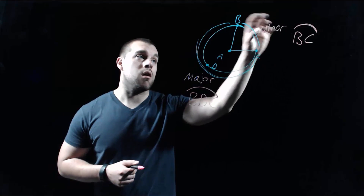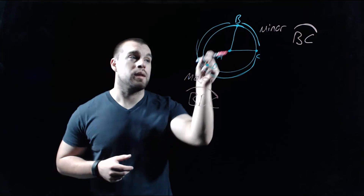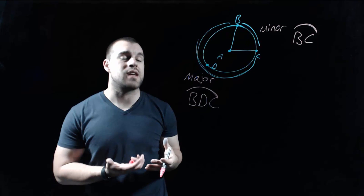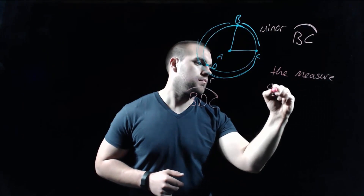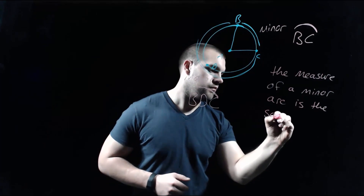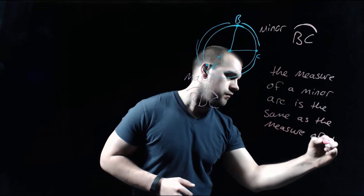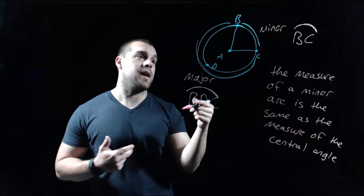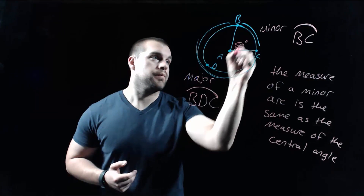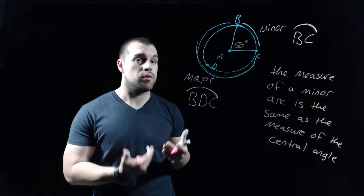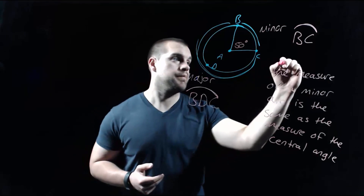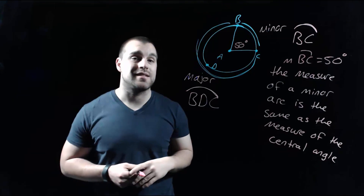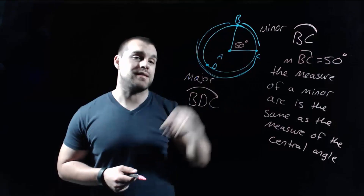With our minor arc BC, there's a relationship between the measure of the central angle and the measure of that minor arc — and the relationship is that they're exactly the same. So in our picture, if this angle in the middle was a 50-degree angle, then the measure of the arc that runs from B to C is a 50-degree arc, because the measure of the minor arc is exactly the same as the measure of the central angle that creates that minor arc.